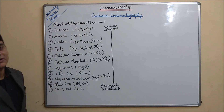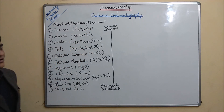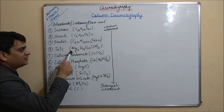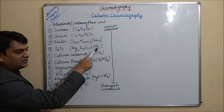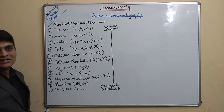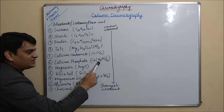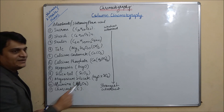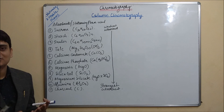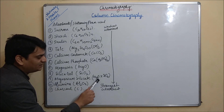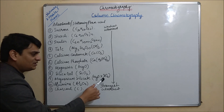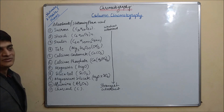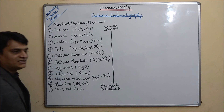The chemical formulas for each adsorbent: sucrose is C12H22O11; starch is C5H10O5 (n); inulin is C6(n)H10(n+2)O5(n+1); talc is Mg3Si4O10(OH)2; calcium carbonate is CaCO3; calcium phosphate is Ca(H2PO4)2; magnesia is MgO; silica gel is SiO2 — the most commonly used stationary phase; magnesium silicate is MgO·xSiO2; alumina is Al2O3 — the second most useful stationary phase; and charcoal is carbon.